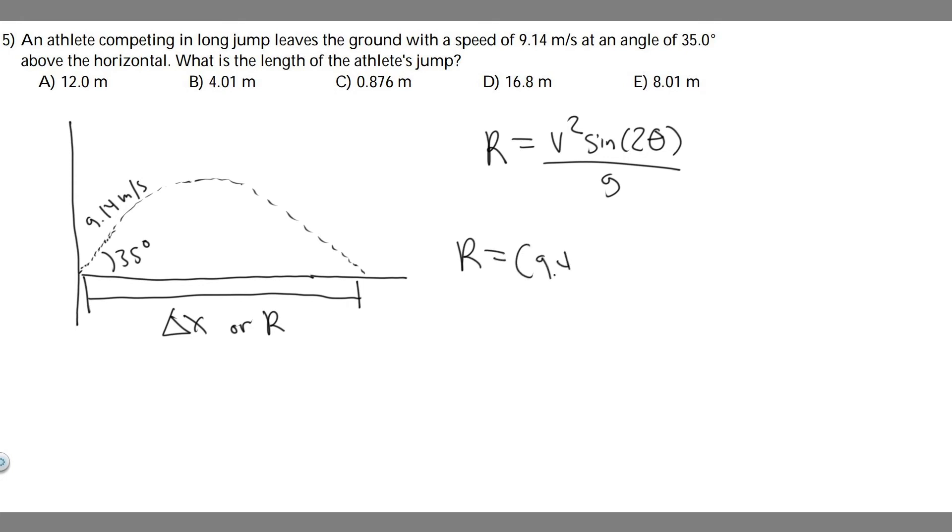So if we start plugging it in, we square it, and then the sine of 2 theta. Theta in this case is just the angle at which they're jumping. We know they're jumping at 35, so 2 times 35. Then divided by g. So g is just the acceleration due to gravity or 9.8. You can use 9.81 if you want; I'm just going to use 9.8.